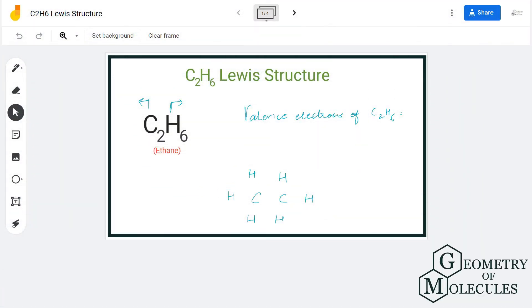Hi guys, today in this video we are going to determine the Lewis structure for C2H6, which is the chemical formula for ethane. It is made up of two carbon atoms and six hydrogen atoms.